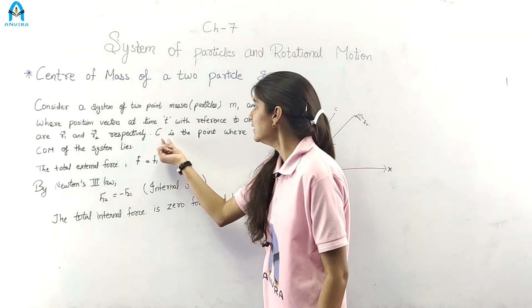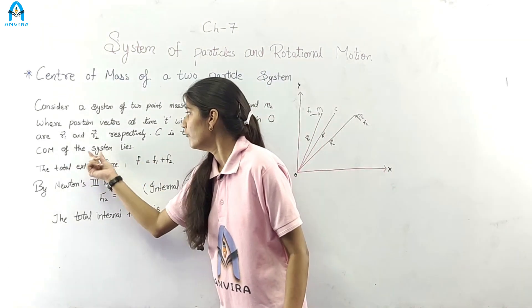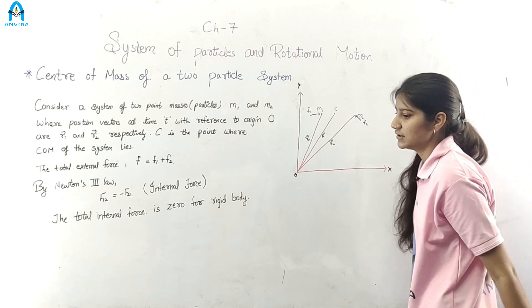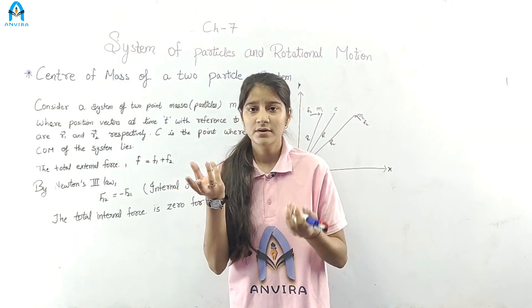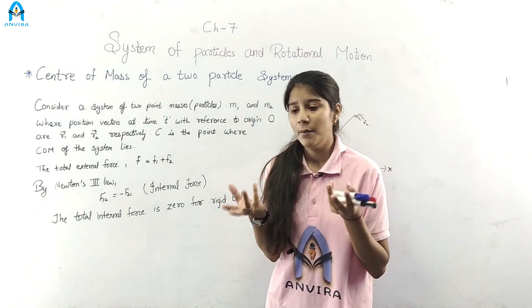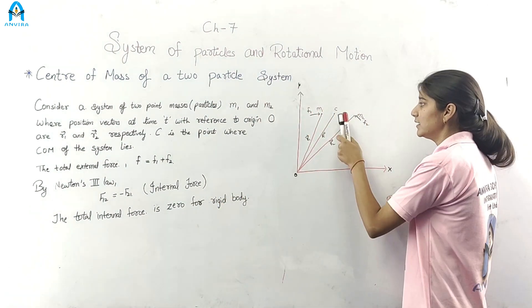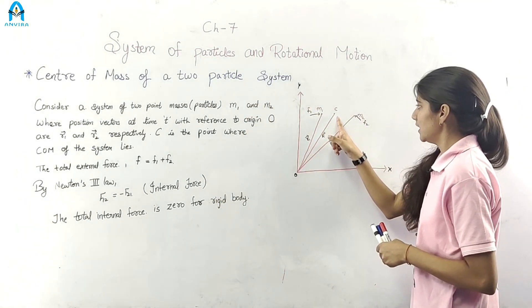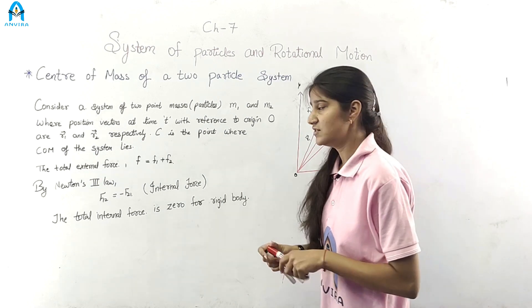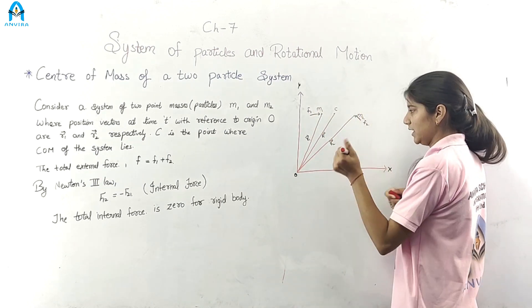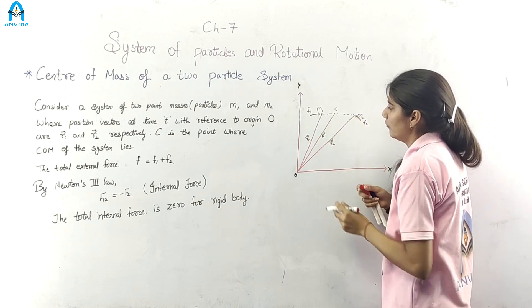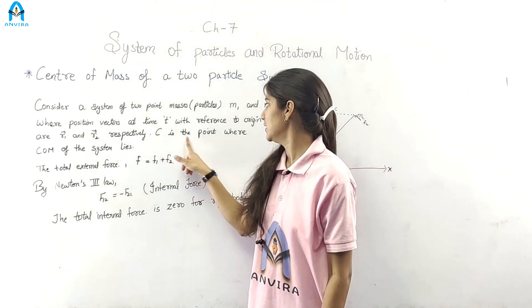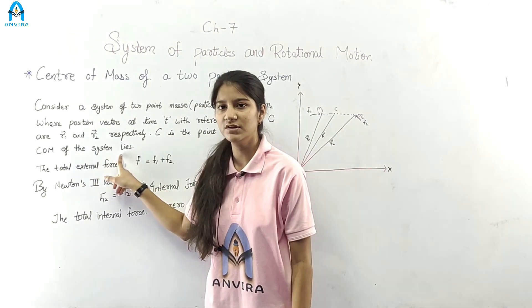For example, C is the point where the center of mass of the system lies.